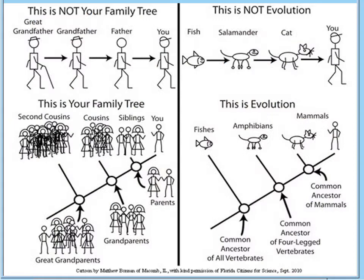Your family tree is not a straight line from your grandfather to your father to you, and evolution isn't a line from a salamander to a cat to you. You share a common ancestor with your siblings — your parents. For a cat and a human, there's a common ancestor of mammals. You've got two sets of grandparents, two grandmas and two grandpas, and they're the common ancestor between you and your cousins. We're also not saying human is first place, cat second place, and amphibian third place.